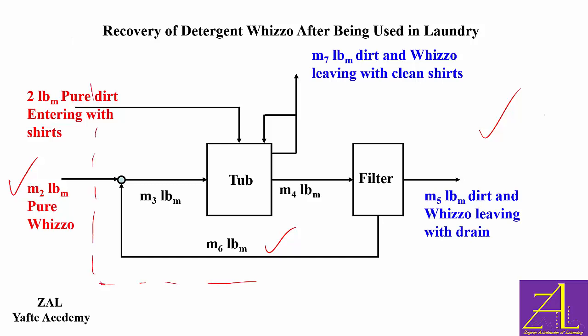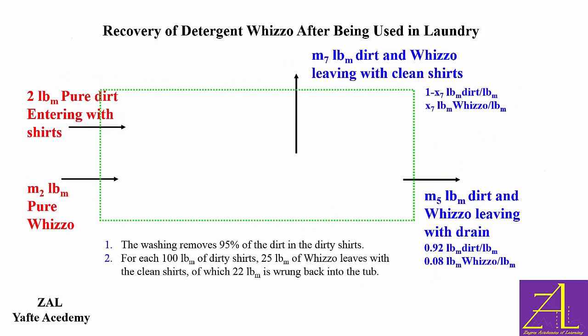If we draw a dotted line around the entire system, the streams crossing the boundary are: the basis, m2 (which is one of the unknowns in the problem), stream 5, and stream 7. A sub-flowchart of the system shows only the streams crossing the boundary, fully labeled with compositions added. The unknowns for this system are m2, m7, x7, and m5.